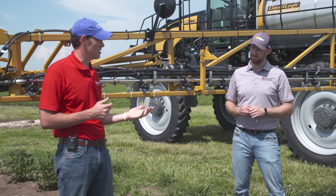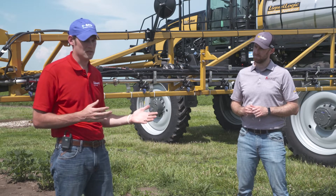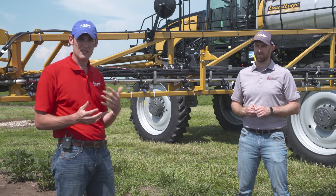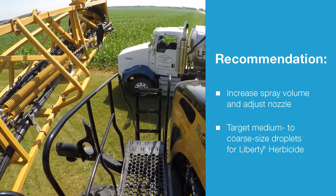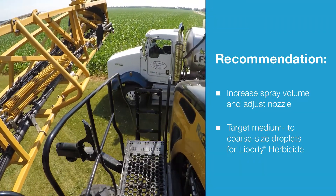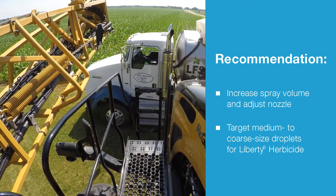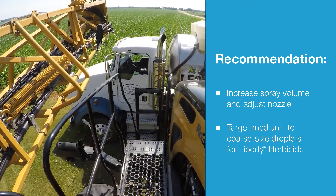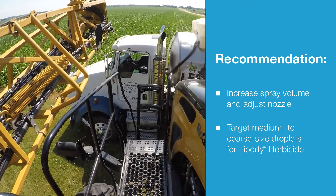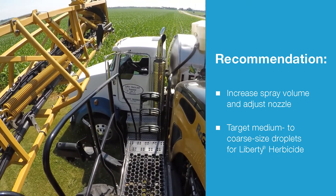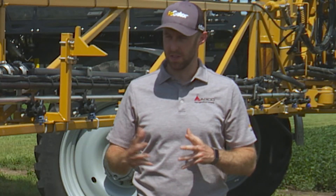Instead of increasing pressure, an applicator has a couple of options. The lead recommendation would be to increase your spray volume gallonage and then make corrections to your nozzle to ensure that you're still getting that medium to coarse droplet spectrum that's ideal for Liberty herbicide applications.